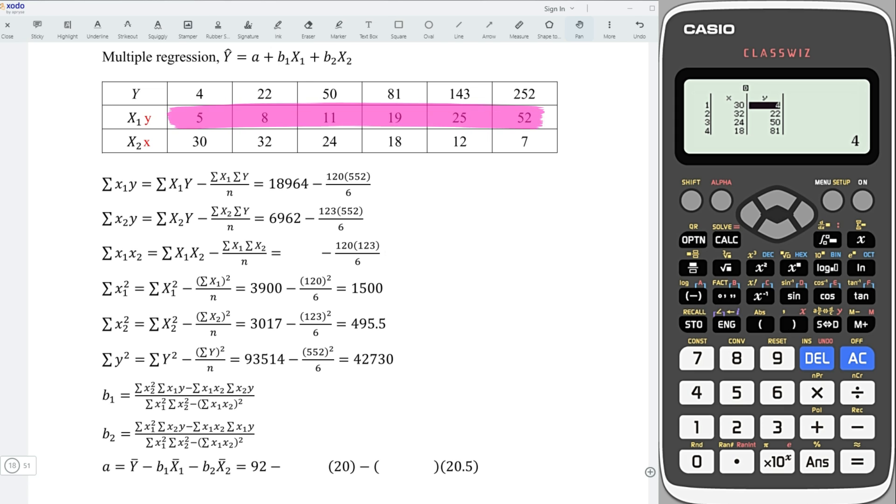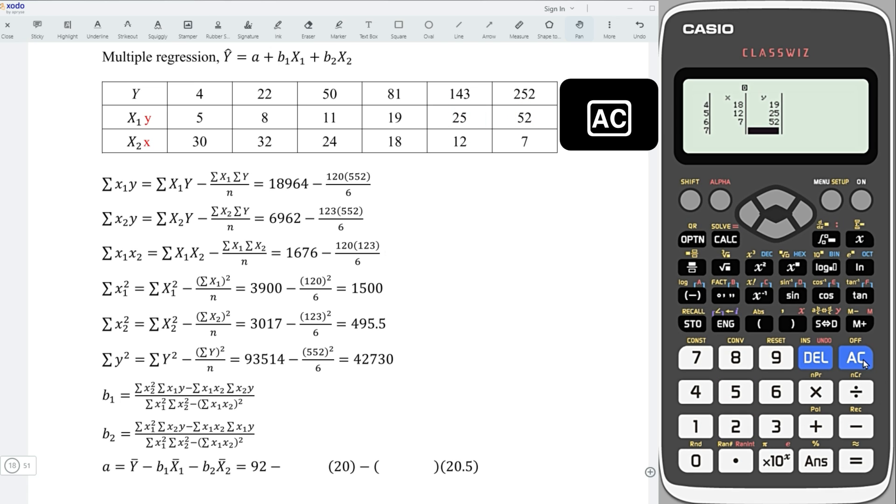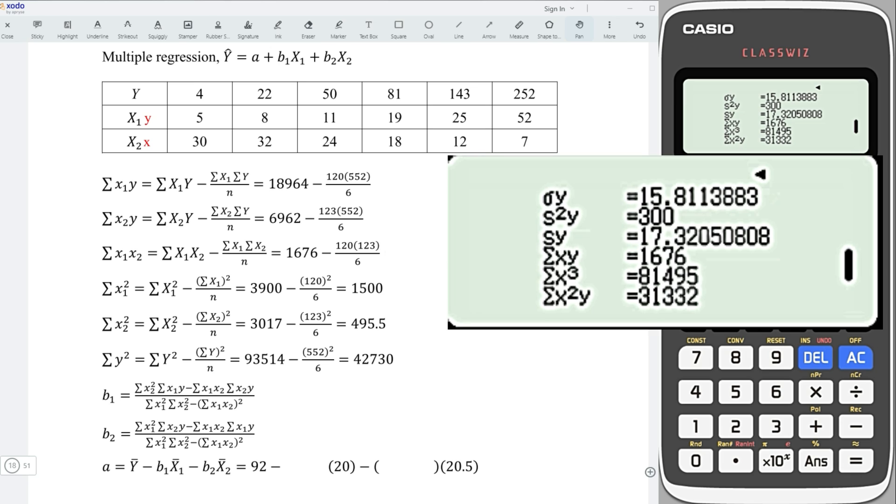Let's enter the values: 5, 8, 11, 19, 25, 52. Next, press on AC option, 2 variable calculations, down, and down, and we should obtain the summation of the product.